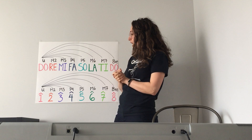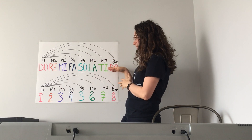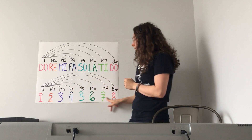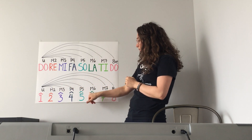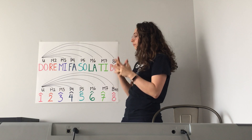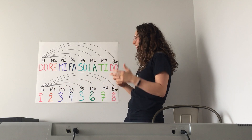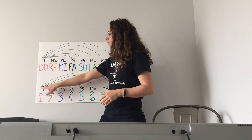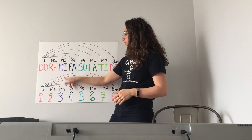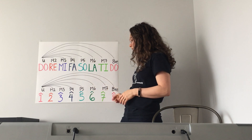Let's first sing the interval names, then we'll sing the solfège syllables that go along with them, then we'll sing the scale degrees. If you see a little hat on top of a number in musical writing, it means scale degree — that just means the place that this note takes in the scale. Do is the first note, Re is the second, Mi is the third, Fa is the fourth, and so on.